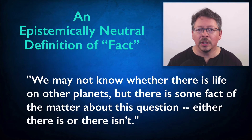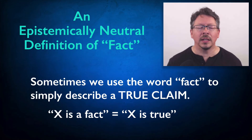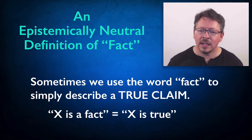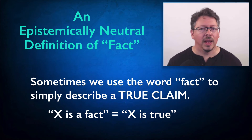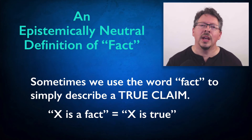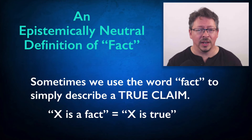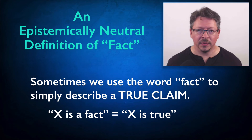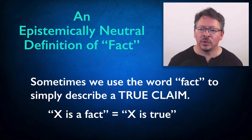This is the key to the epistemically neutral definition of the word 'fact.' Sometimes we use the word 'fact' to simply describe a true claim — to say X is a fact is just to say that X is true. That's it. And this is an epistemically neutral usage of the word; it doesn't imply anything about the epistemic status of the claim. To say that X is true is not to say that we have good reason to believe X is true, or even that anyone believes X is true. Maybe no one believes X is true — it could still be the case that X is in fact true.